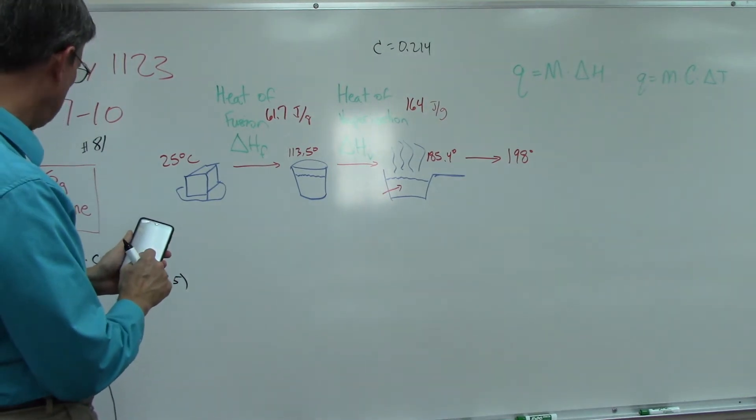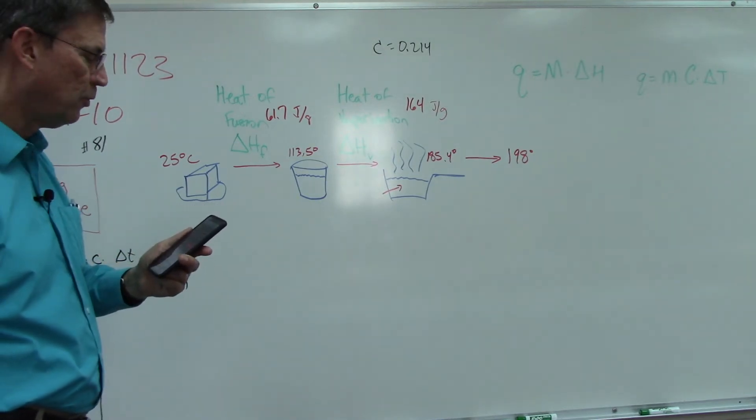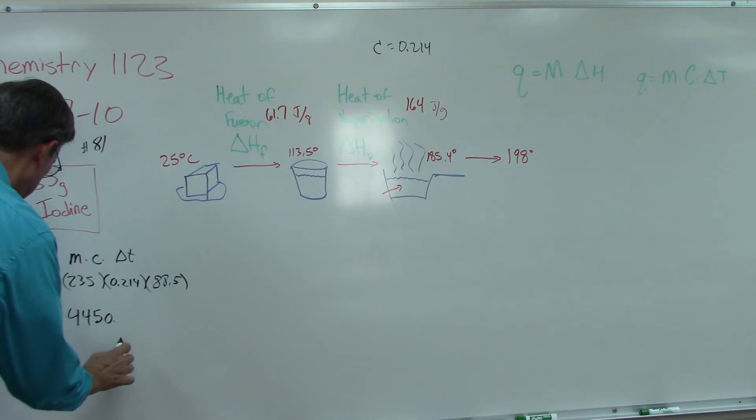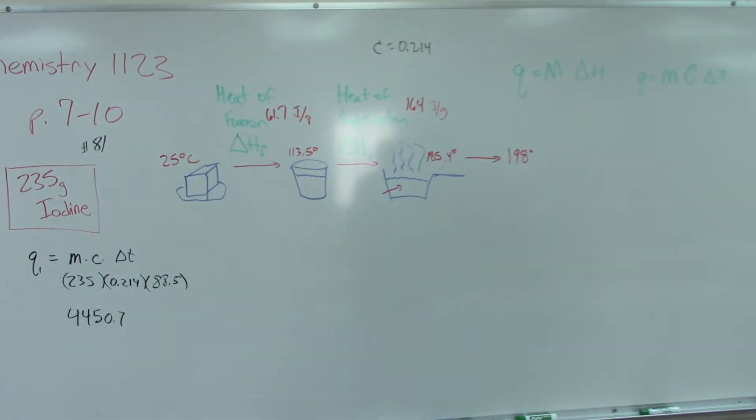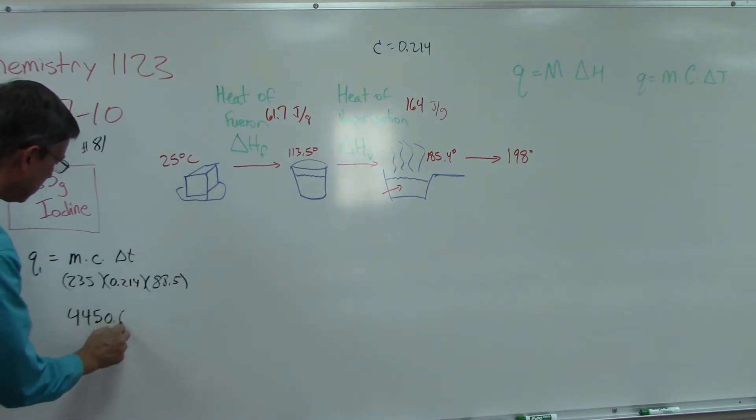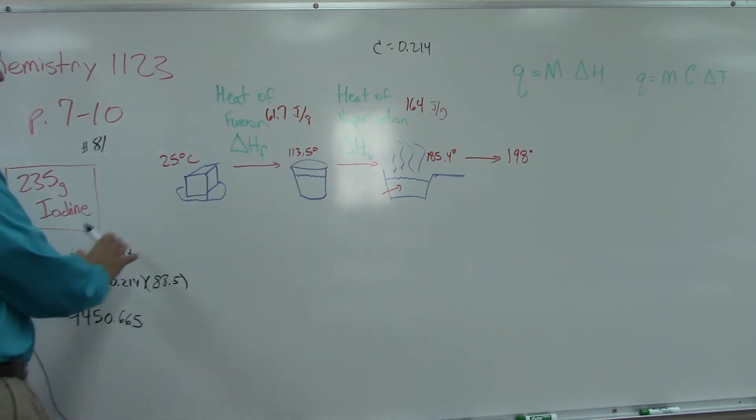Multiply those together: times 0.214 times 235. Did y'all get 4450? We'll round it to one decimal place. Actually, looking in the key, they carry it out, so we're not going to round it yet. We're going to wait.